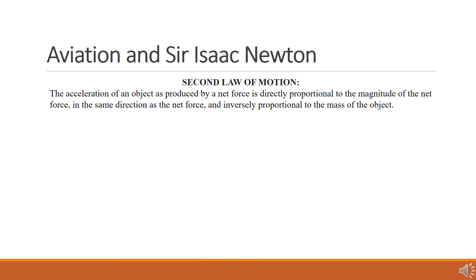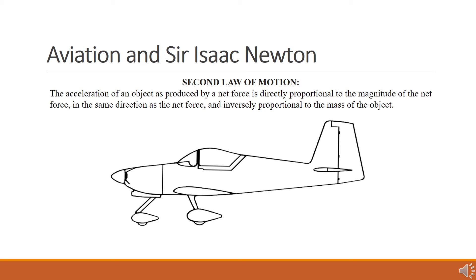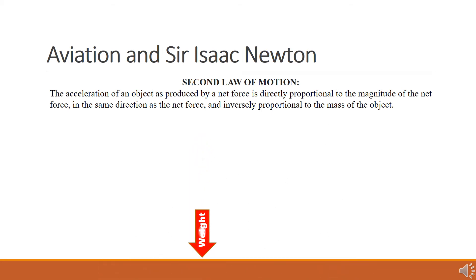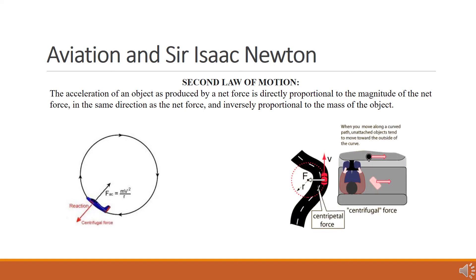Newton's second law of motion explains how the velocity of an object changes when it is subject to an unbalanced external force. The law defines the force to be equal to the change in momentum, or mass times velocity, per unit of time. When unbalanced forces act on an aircraft, the aircraft accelerates in the direction of the largest force. In other words, a force will cause a change in velocity, and likewise, a change in velocity will generate a force. This would explain the concept of G-forces in a high-performance aircraft, or why, when you turn a corner in a car, you feel like you are being pushed away from the turn.